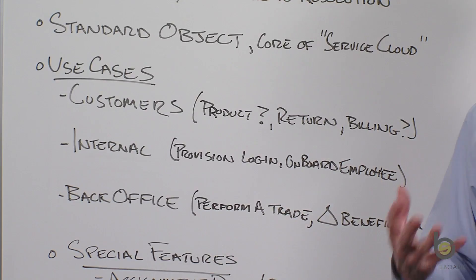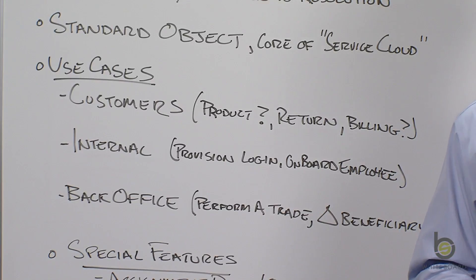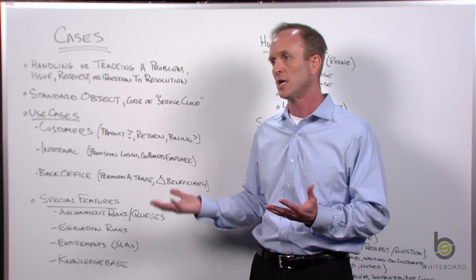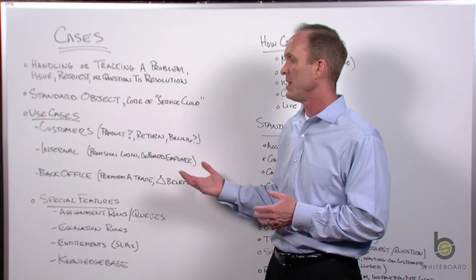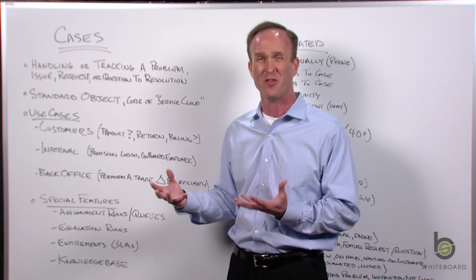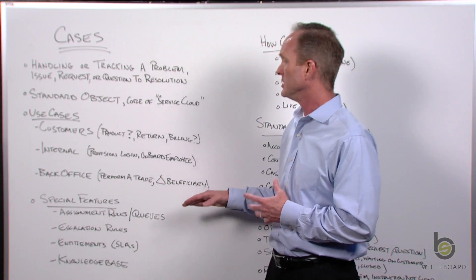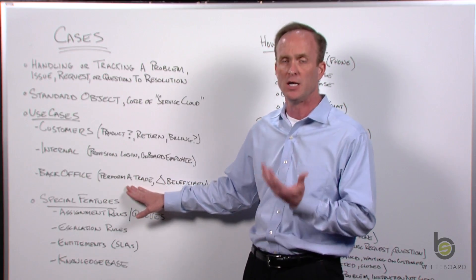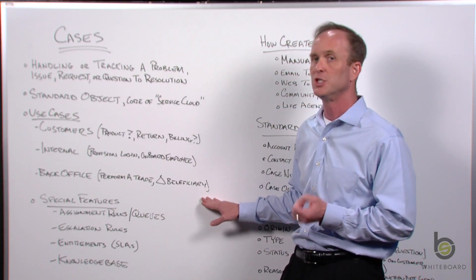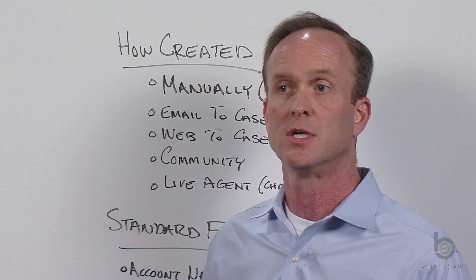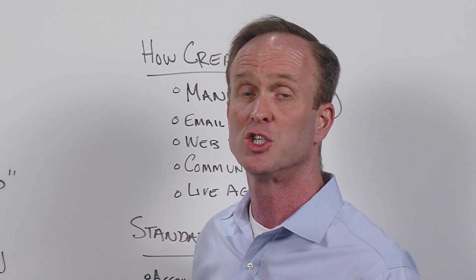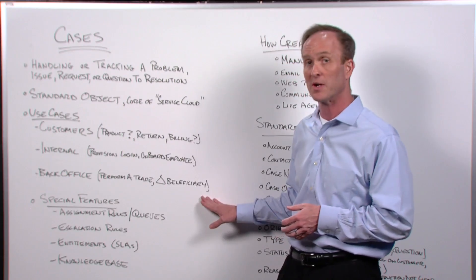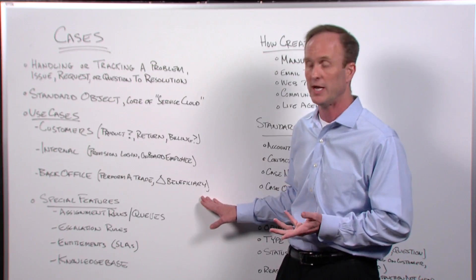Also common are back office requests to help with customer requests. Let's say we're a financial institution — maybe a bank, wealth management shop, we do stock trades, or maybe we're an insurance company. You may want a more formal way to track these requests rather than a task. Examples include performing a trade, opening a financial account, a change of address, or a change of beneficiary on an insurance policy — where you want that request tracked to resolution.